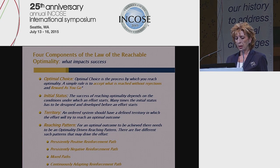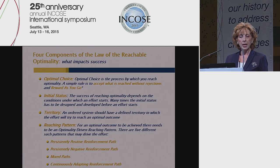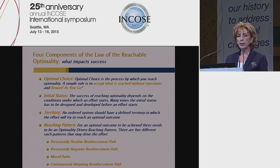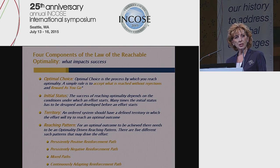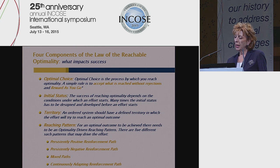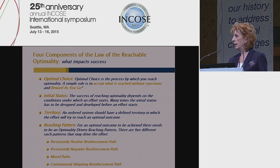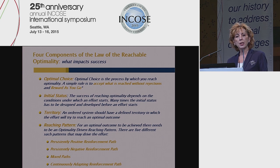There are four different reaching patterns: persistently positive reinforcement, persistently negative reinforcement, a mixed path, and the continuously adapting reinforcement path. For human systems, there is only one that works — the first one: persistently positive reinforcement. You cannot achieve an optimal outcome by any of the other three. Let me give you an example of where I learned about positive reinforcement as the means to achieve an optimal outcome. I was talking once with a student at UC Davis who was working for an aquarium near San Francisco in California.